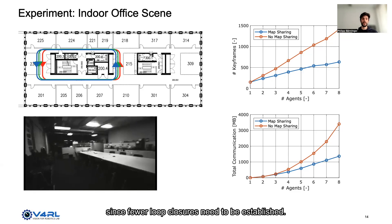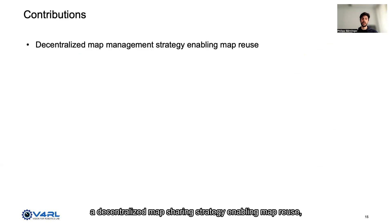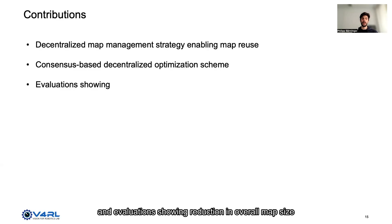In summary, our contributions are a decentralized map sharing strategy enabling map reuse, a consensus-based decentralized optimization scheme, and evaluations showing reduction in overall map size, as well as the inherent scalability of our approach.